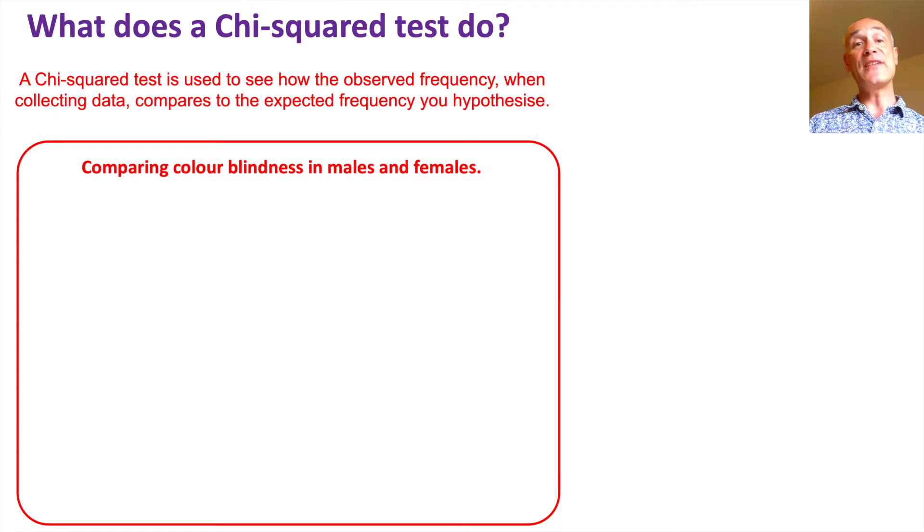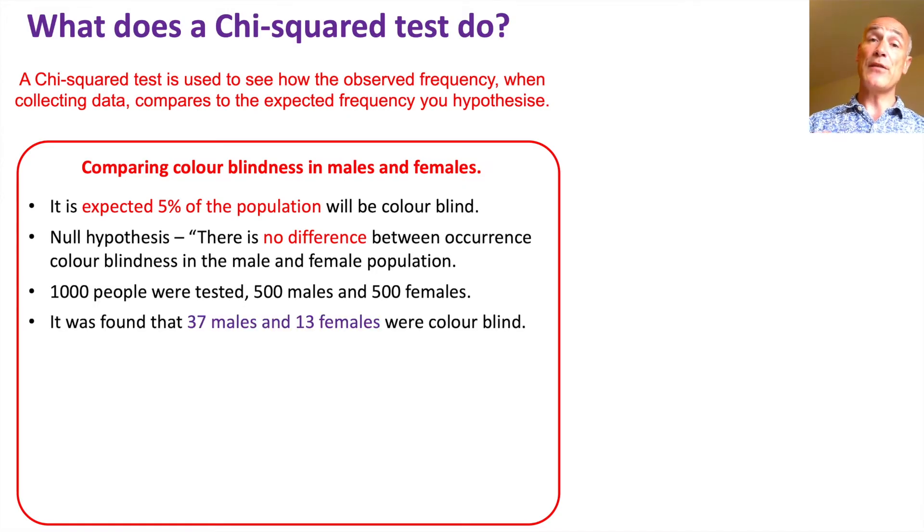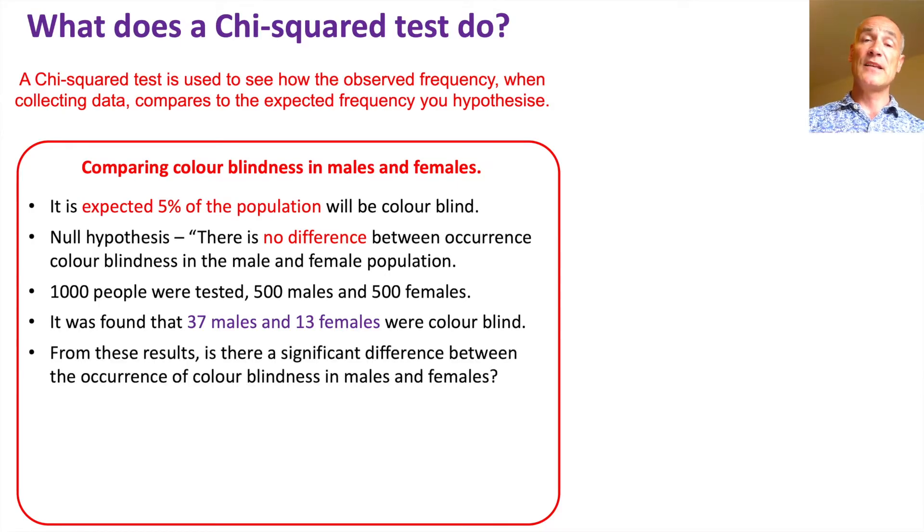Here's the first example I've chosen and this is comparing color blindness in males and females. So theory suggests that it's expected that 5% of the population will be colorblind. So I'm to see whether there's a difference between male and female populations. My null hypothesis would be there is no difference between the occurrence of color blindness in the male and female population. They tested 500 males and 500 females, so a thousand in all in their sample. They discovered that 37 males and only 13 females were colorblind. So from these results, is there a significant difference between the occurrence of color blindness in males and females?